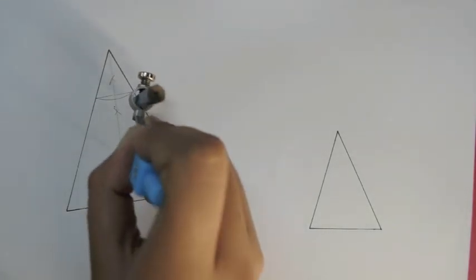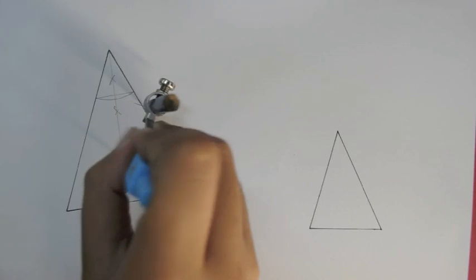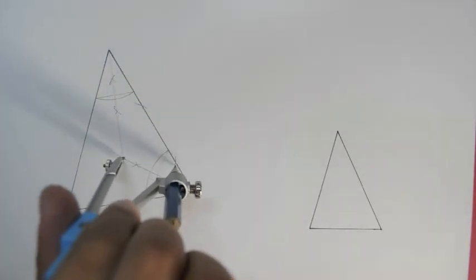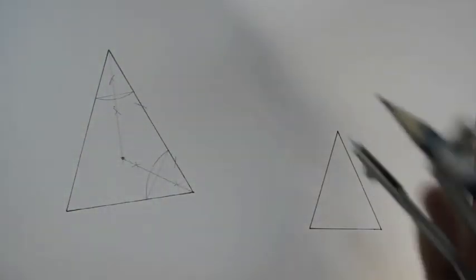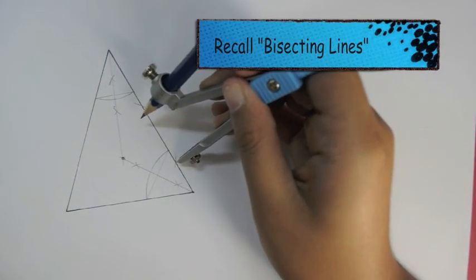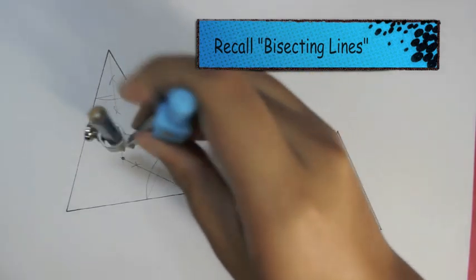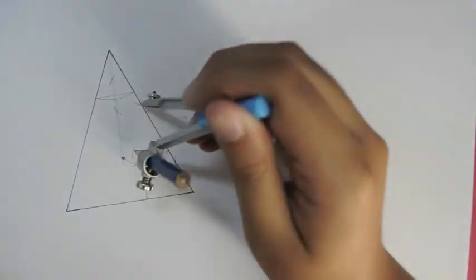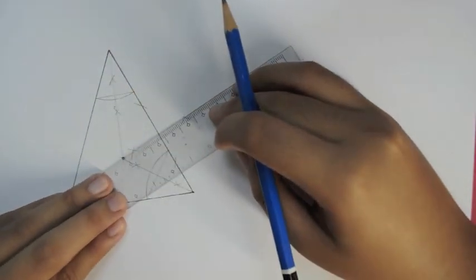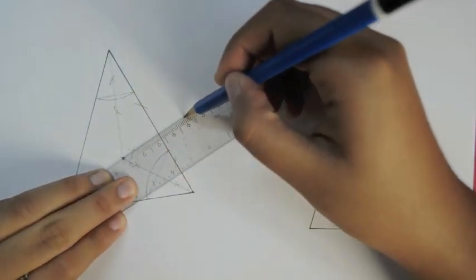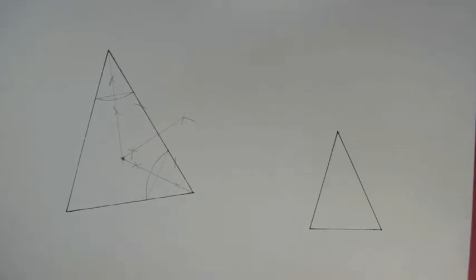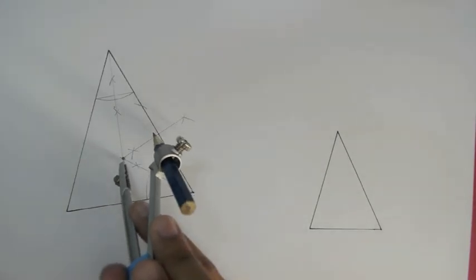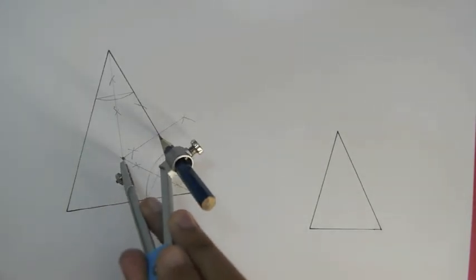Draw a perpendicular line from the center to any of the sides of the triangle. The distance from the center to the side of the triangle will be the radius of the circle.